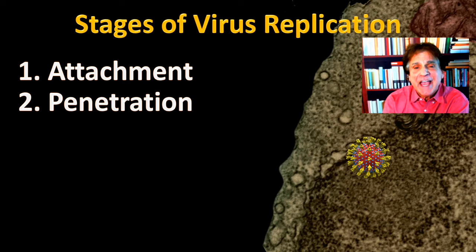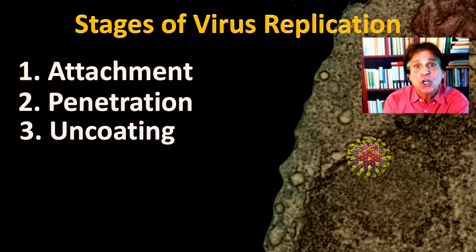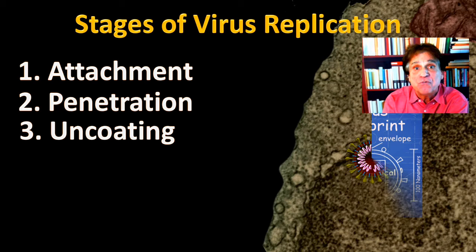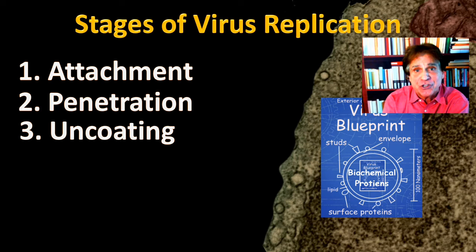In the case of SARS-CoV-2, we need to remove the outer coverings of the virion and reveal its genetic code. This stage is called uncoating, and when the virus becomes uncoated, its genetic material becomes available to travel in the cytoplasm to the sites of protein synthesis.